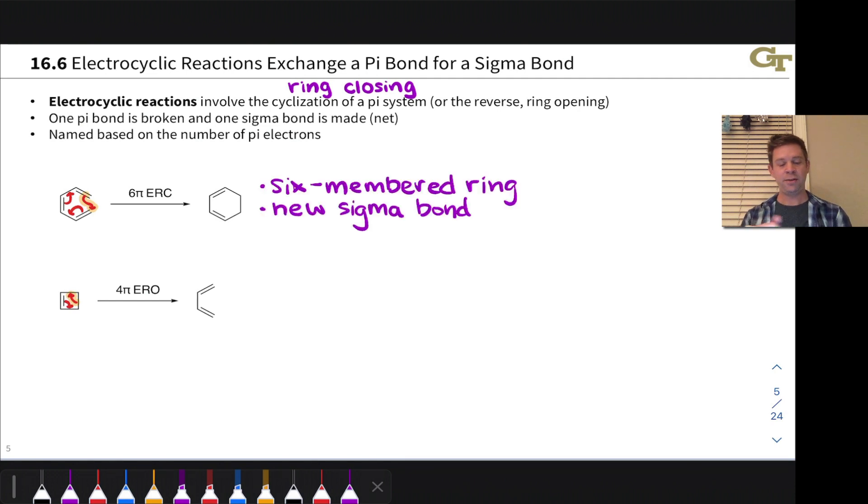So, for example, in this first case, this cyclization is often favorable because we're ending up with a six-membered ring and we're trading a new sigma bond for a pi bond. And sigma bonds generally being stronger than pi bonds, this tends to be a favorable process.